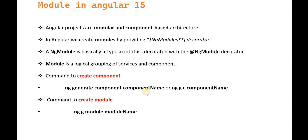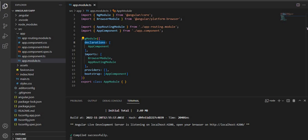In the future, if we are going to create any component, the command is 'ng generate component component-name'. For a shortcut, we can write 'ng g c component-name'. For creating a module, we can give 'ng g module module-name'. These are the commands we can use.